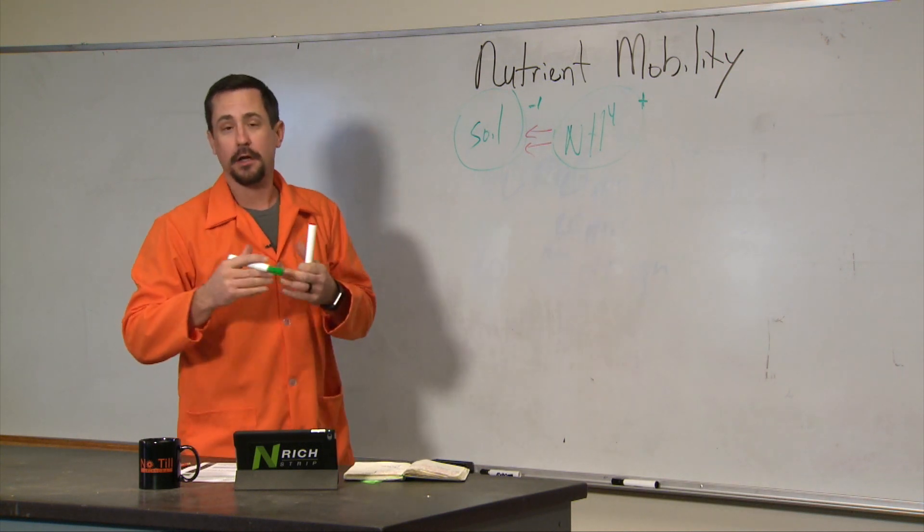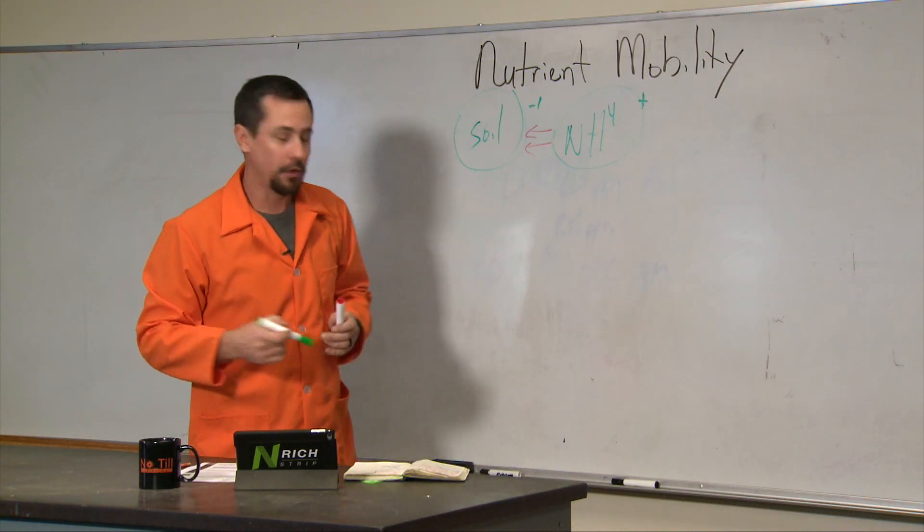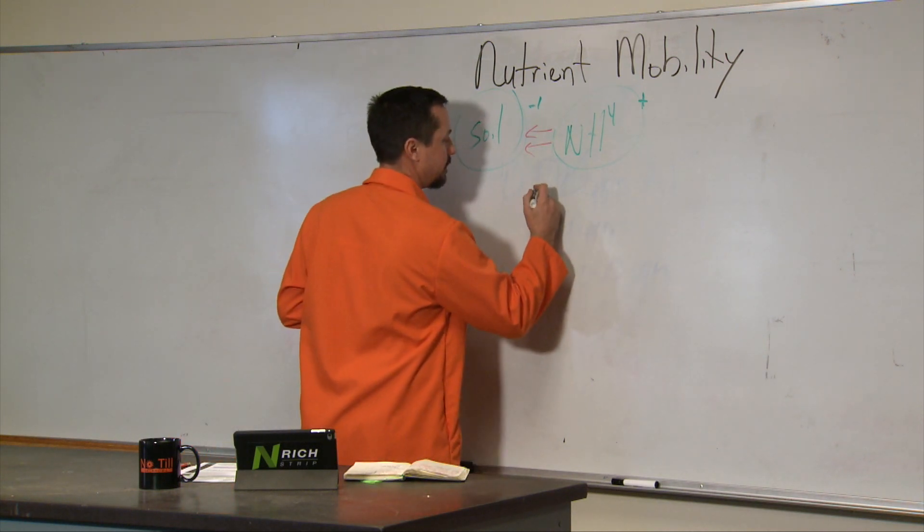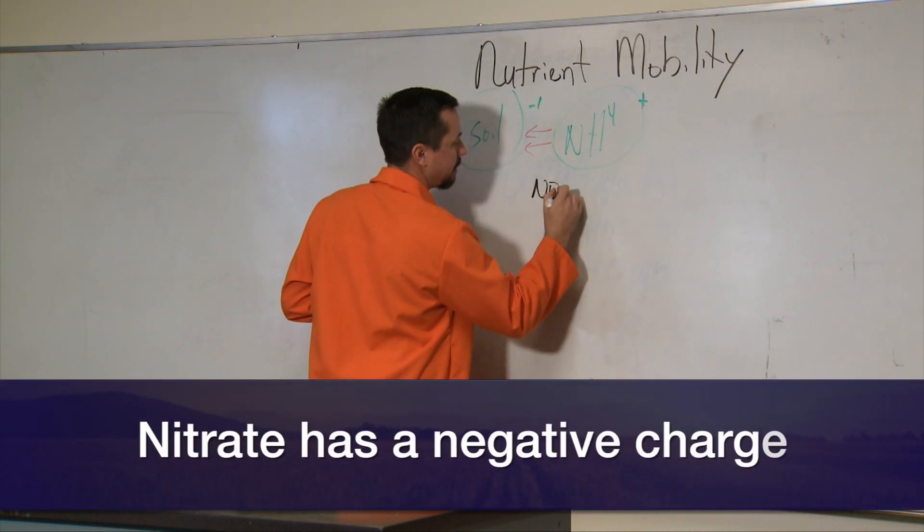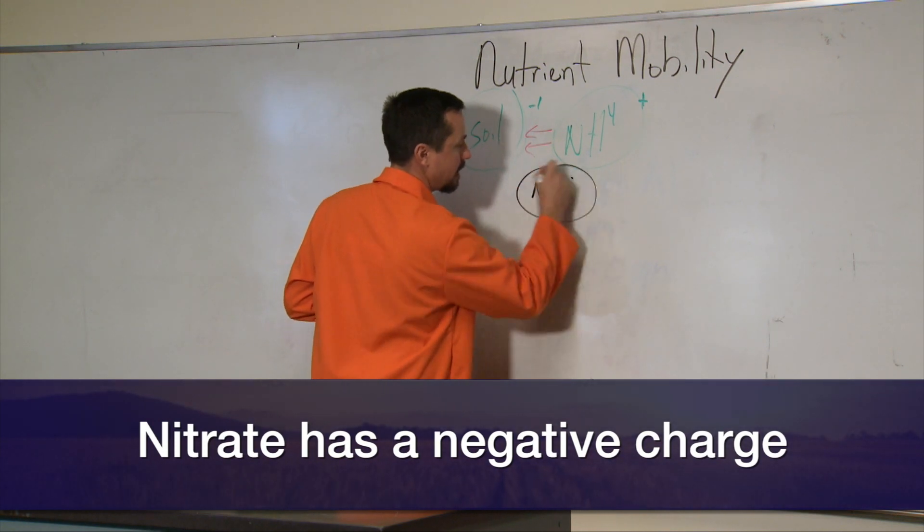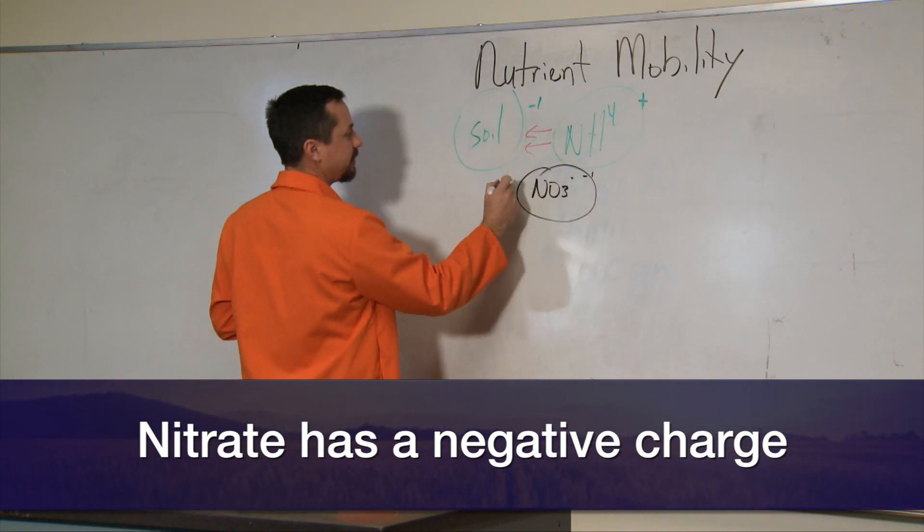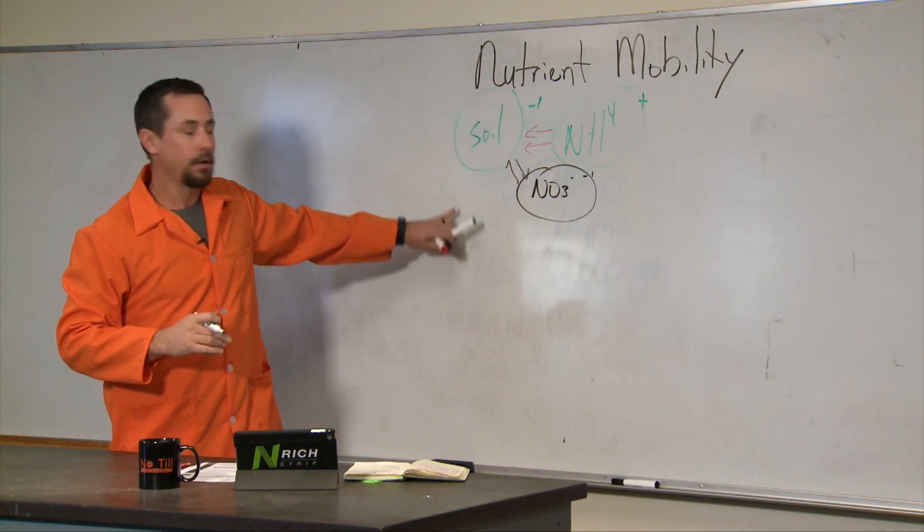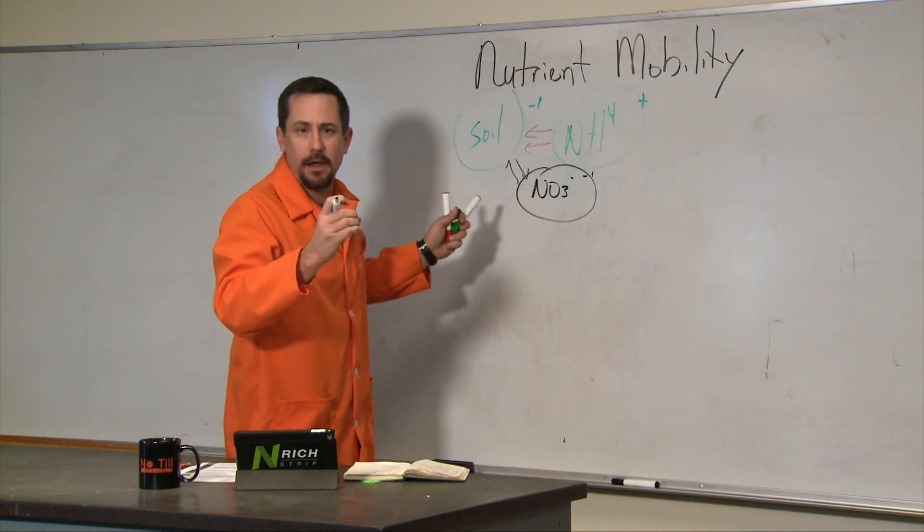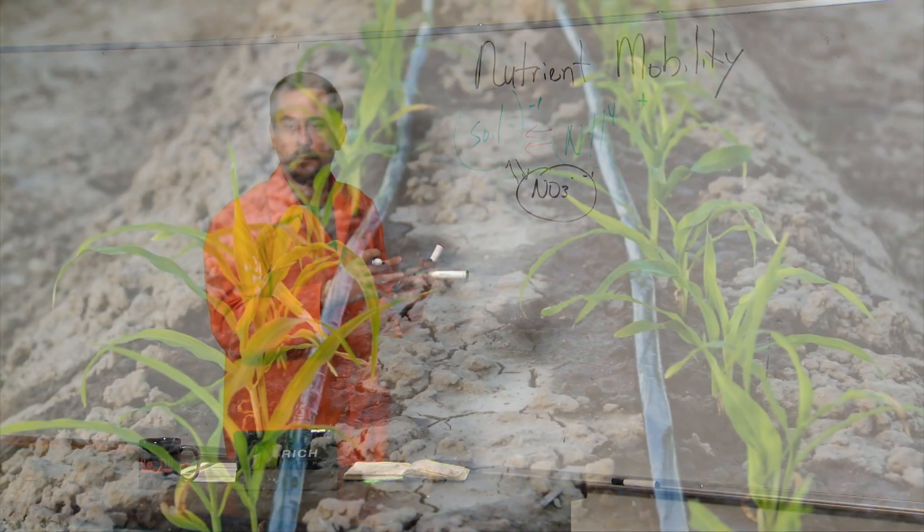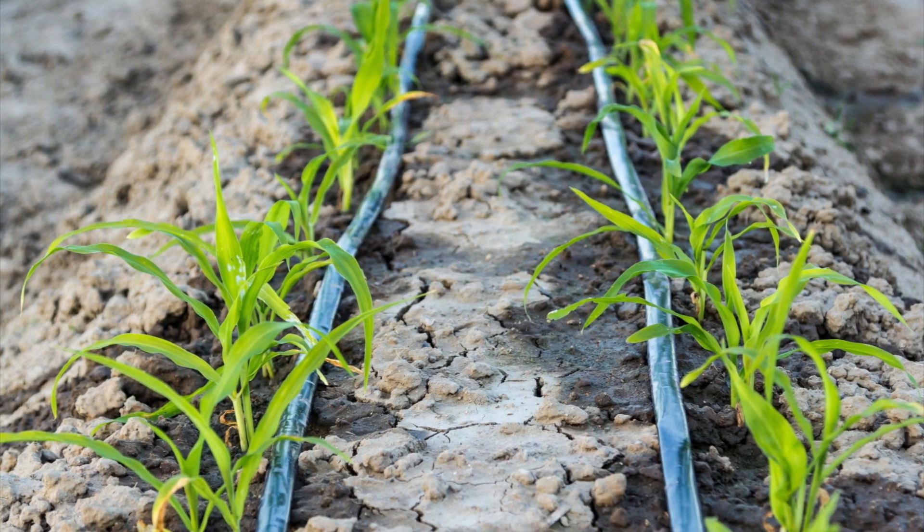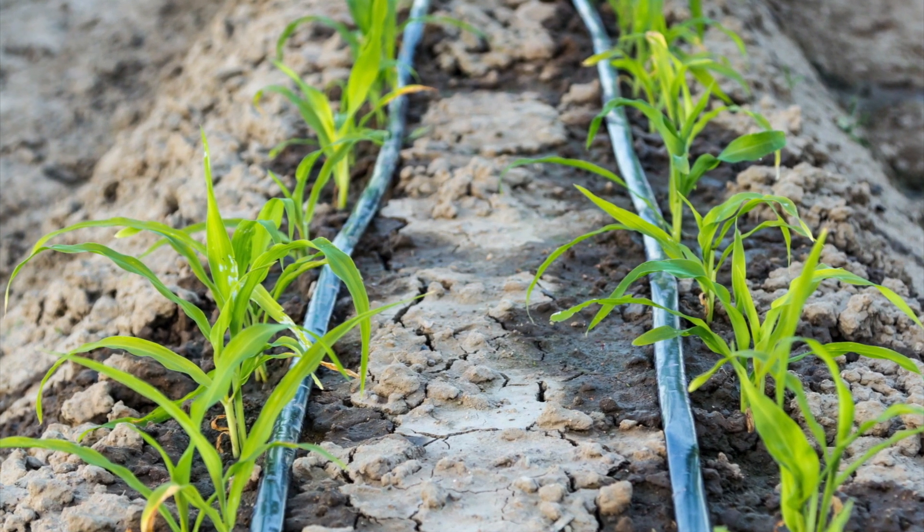Now I usually talk about nitrate as being the most mobile of all of our nutrients. Nitrate is NO3 negative. So we have a negative charge. That's why they repel each other. The soil particle and the nitrate particle repel each other, and nitrate stays in water solution. Because it's in water solution, wherever the soil water goes—up, down, sideways—nitrate will follow.